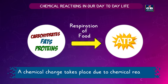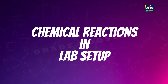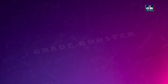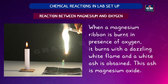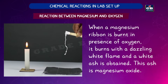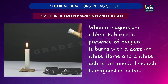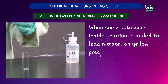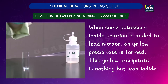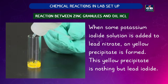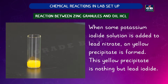A chemical change takes place due to a chemical reaction. Let us see some examples of chemical reactions in a lab setup. When a magnesium ribbon is burnt in presence of oxygen, it burns with a dazzling white flame and white ash is obtained — this ash is magnesium oxide. When some potassium iodide solution is added to lead nitrate, a yellow precipitate is formed, which is lead iodide.